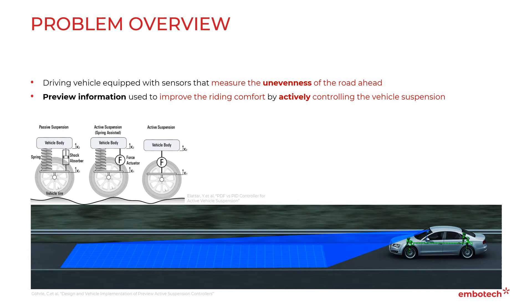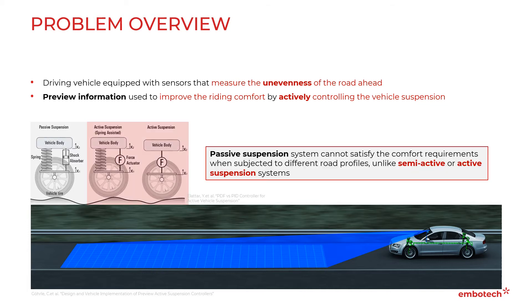Note that there are several different types of vehicle suspension control, primarily categorized into passive, semi-active, and active suspension. However, passive suspension systems cannot satisfy the comfort requirements when subjected to different road profiles, unlike semi-active or active suspension systems.